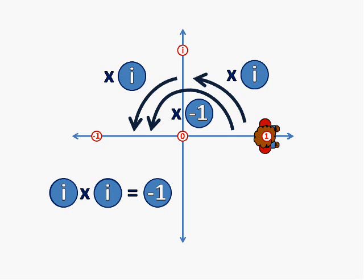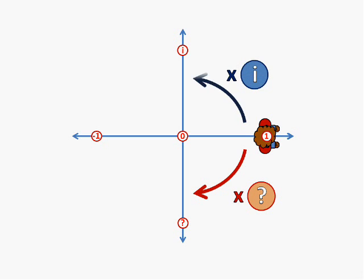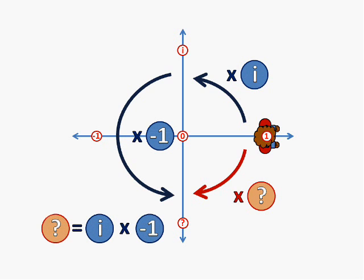Mathematicians call this number i, or occasionally j. It has the property that i squared equals minus one. Now you may be thinking, in a 2D world, I can rotate 90 degrees in two different directions. So which is i? Well by convention, i is a turn of 90 degrees anticlockwise. So what is a turn of 90 degrees clockwise called? Well if you think about it, a turn of 90 degrees clockwise is equivalent to a turn of 90 degrees anticlockwise, followed by a turn of 180 degrees. Or a rotation by i, and then minus one. So a rotation of 90 degrees clockwise is just minus i.